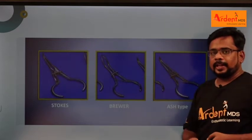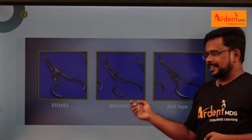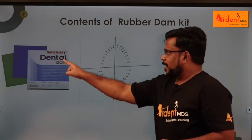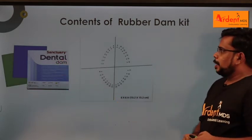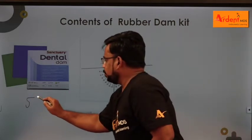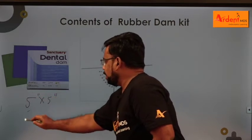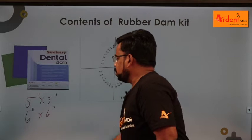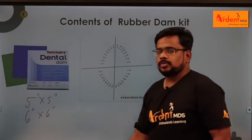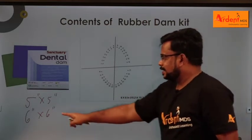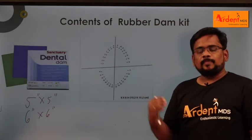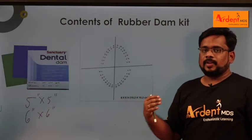Apart from forceps, in a rubber dam kit you have a rubber dam sheet and rubber dam template. The rubber dam sheet is available in two sizes: five by five inches, which is used for children, and six by six inches, which is used for adults. It has various thicknesses: thin, medium, heavy, extra heavy, and special heavy.